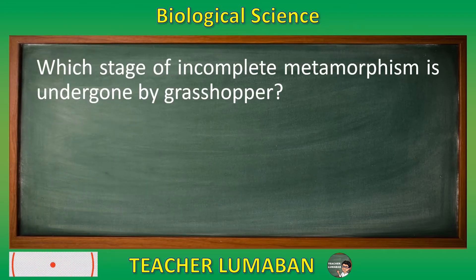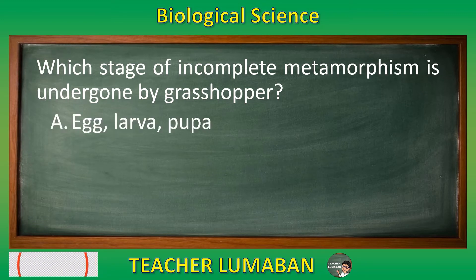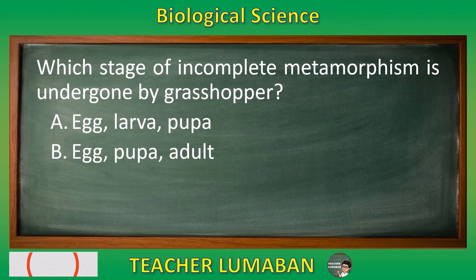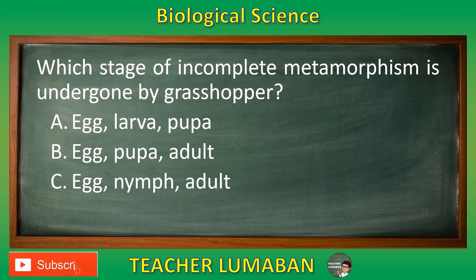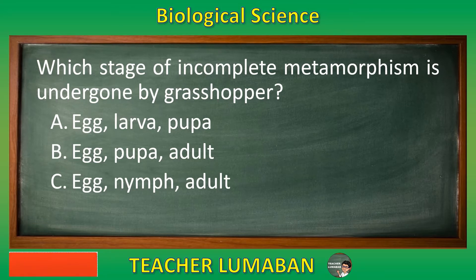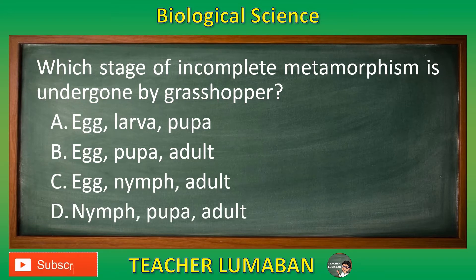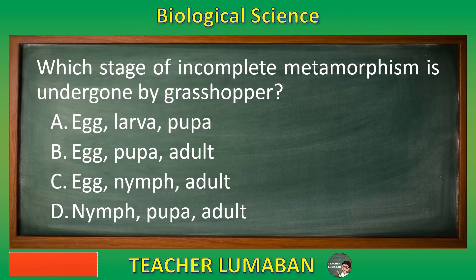Which stage of incomplete metamorphosis is undergone by grasshopper? Letter A: Egg, Larva, Pupa. Letter B: Egg, Pupa, Adult. Letter C: Egg, Nymph, Adult. Letter D: Nymph, Pupa, Adult. Choose the suitable answer based on the given choices in 5 seconds.